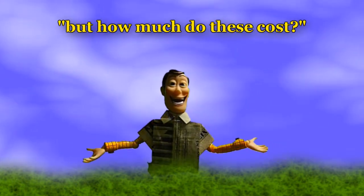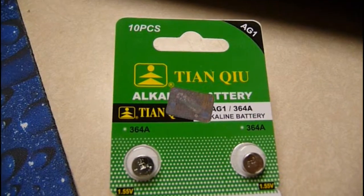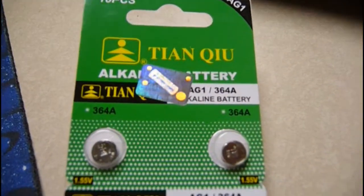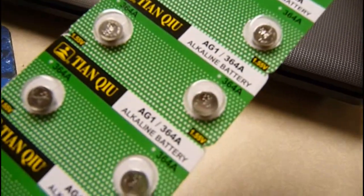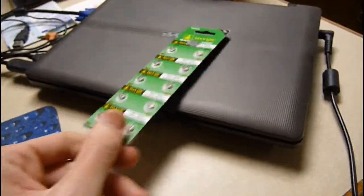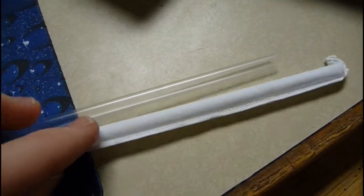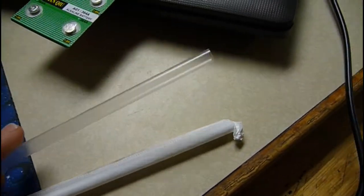So, on to the cost. I've been using these AG1 batteries. You can get a pack of 100 on eBay for about $4. Still using clear straws for the housing of the whole battery and LED thing. These are basically free.